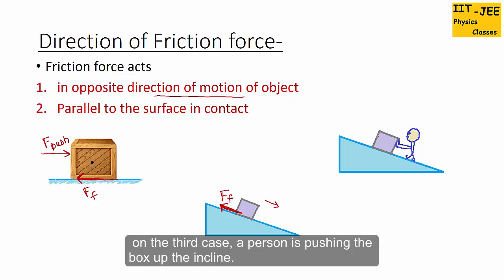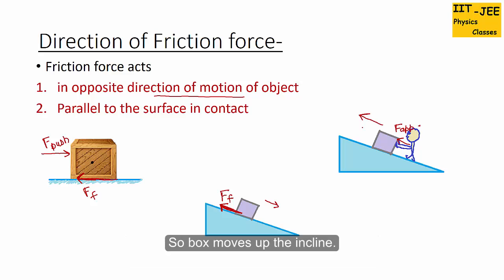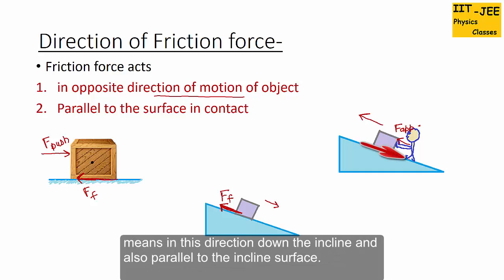The third case: a box is kept on an incline and a person is pushing it up the incline, so the box is also moving up the incline. Friction acts in the opposite direction — down the incline — and is also parallel to the incline surface.